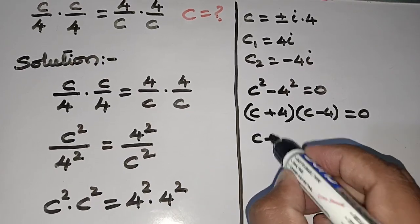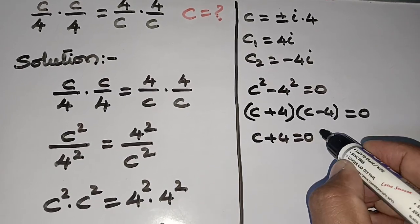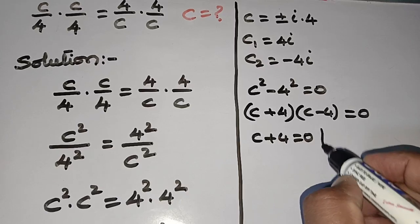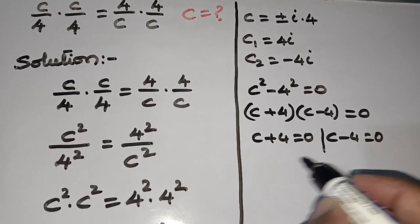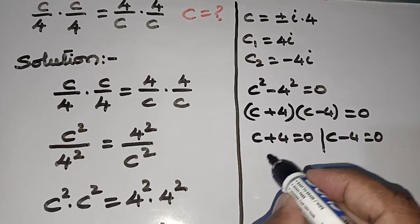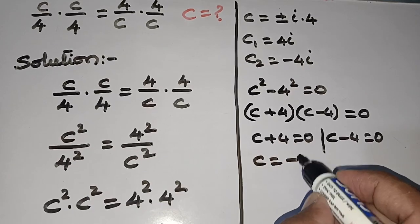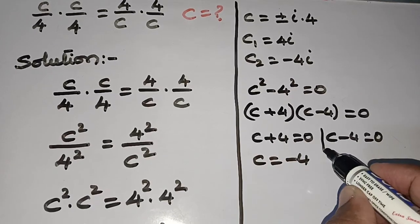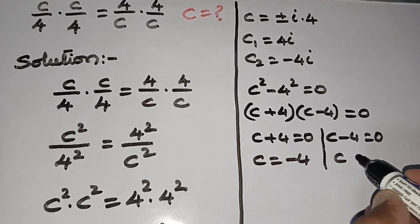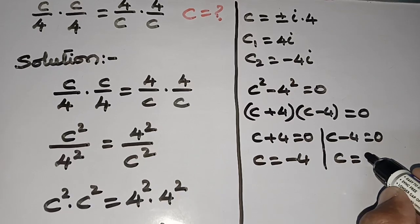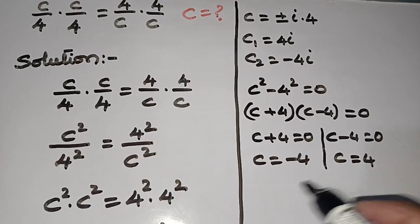So c + 4 = 0 or c - 4 = 0. c + 4 = 0 implies c = -4, and c - 4 = 0 implies c = +4.